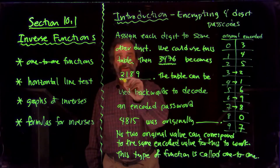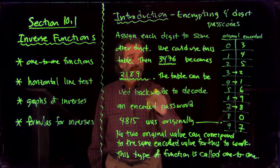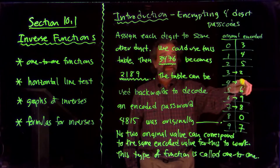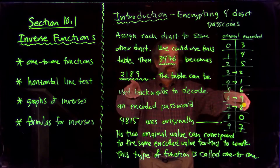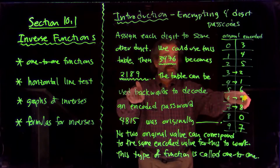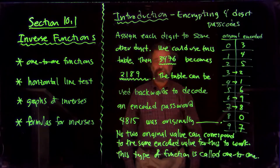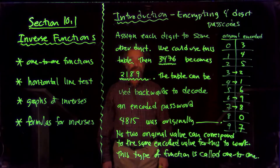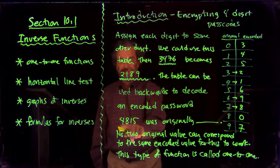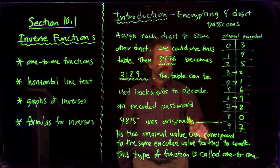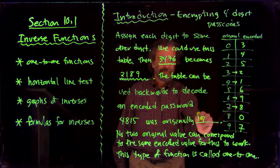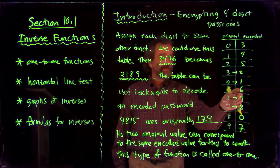Your partner sees the encoded number 2-1-8-9. They have access to the table: they see the two, they know it came from a three; they see the one, they know it came from a four; they see the eight, it came from a seven; and they see the nine, it came from a six. They can reconstruct the original password from this altered password — the table can be used backwards to decode an encoded password. For example, with 4-8-1-5: four was a one, eight was a seven, a one was a four, and a five was a two.